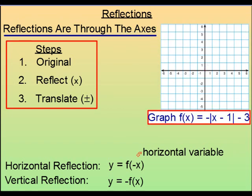Here's another: graph f(x) equals negative absolute value of x minus 1 minus 3. First, recognize this as an absolute value function. Step 2: reflect. Keep in mind there's no negative in front of the x, so that wouldn't reflect us horizontally. It's in front of the whole absolute value, which would reflect us vertically.